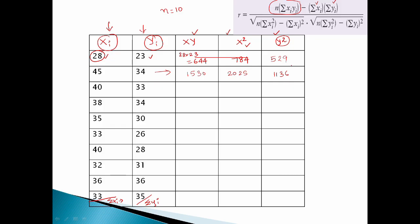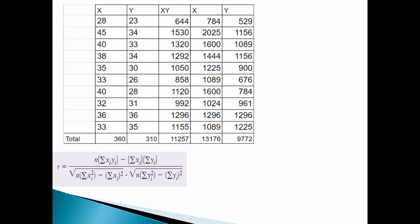We continue filling the table with x, y, xy, x squared, and y squared for all rows. Once the full table is complete, we take the totals. The first column total is summation of xi, which is 360. The second column total is summation of yi, which is 310. We also have the totals for summation of xy, summation of x squared, and summation of y squared.